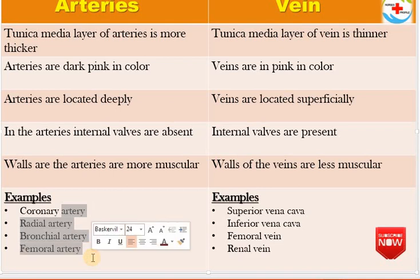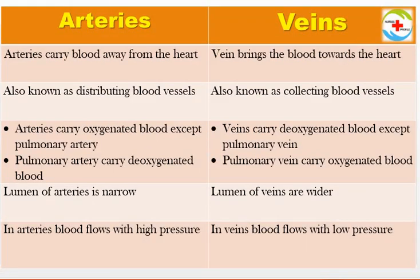Arteries and veins are two types of blood vessels. Arteries carry oxygenated blood to the body. Veins carry deoxygenated blood and return it back to the heart.